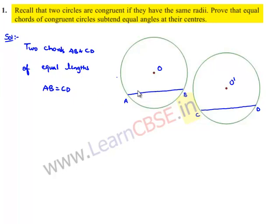Now we need to prove that the angles subtended by them at the center must be equal — that is, angle AOB is equal to angle CO'D.